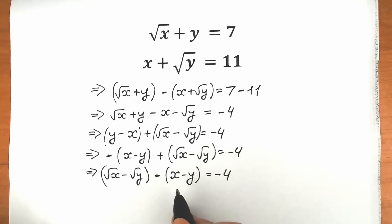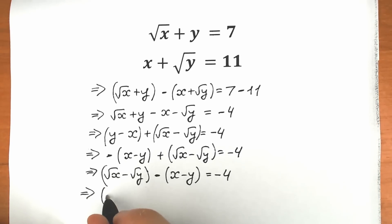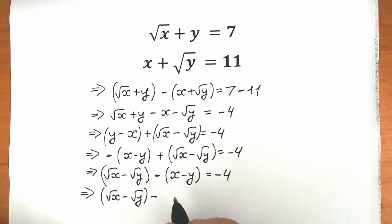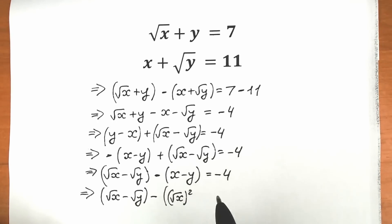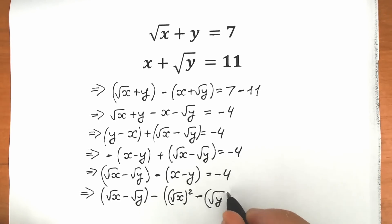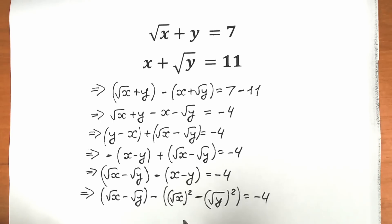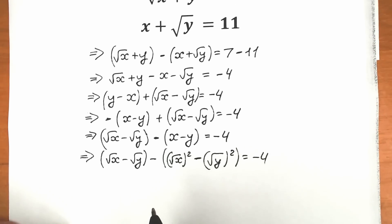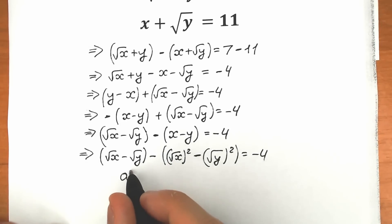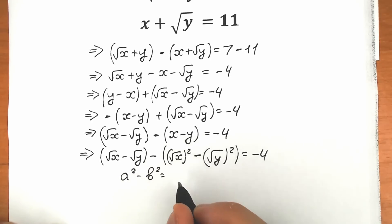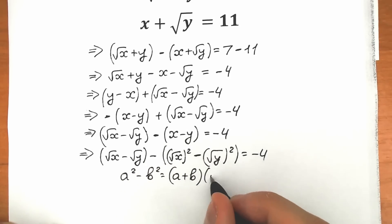Now let's look at the expression x minus y. We can rewrite x as (square root of x) squared and y as (square root of y) squared — this changes nothing since square root of x to the second power equals x. So we now have a difference of squares: a squared minus b squared, where a is square root of x and b is square root of y. This factors as (a plus b)(a minus b).